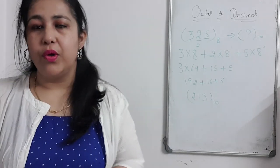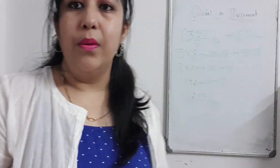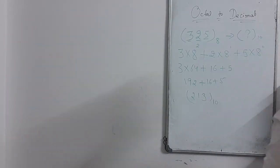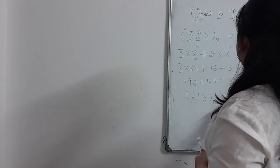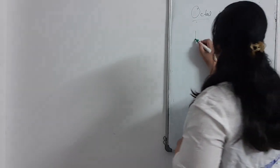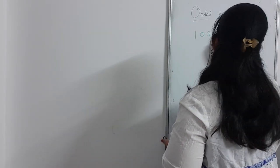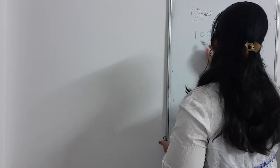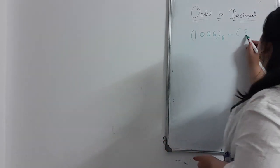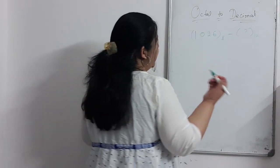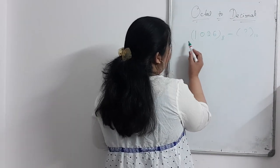So this is how we can convert an octal number to decimal. For your understanding, let me give you one more example. The number is 1026 — this is an octal number and you have to convert it to decimal.